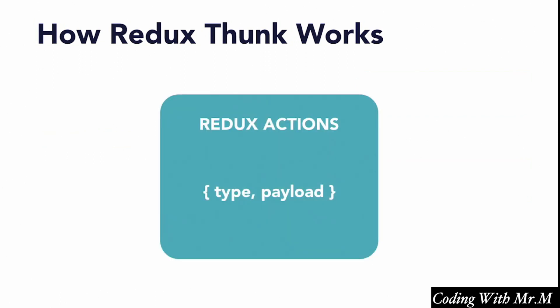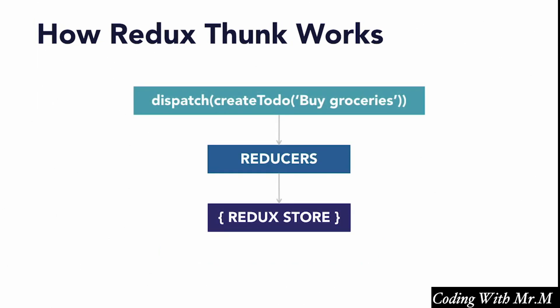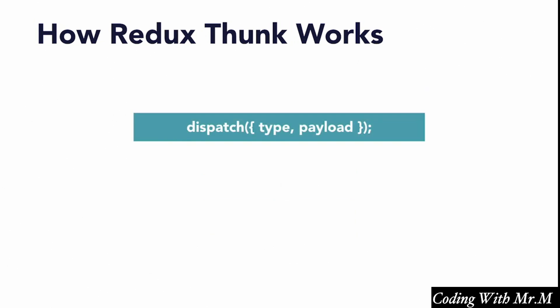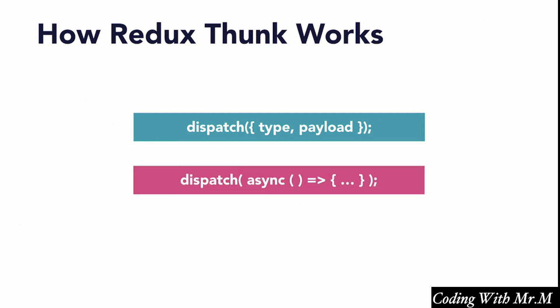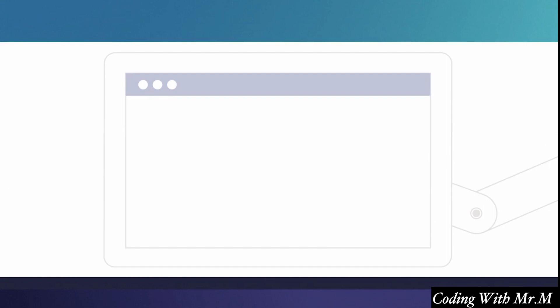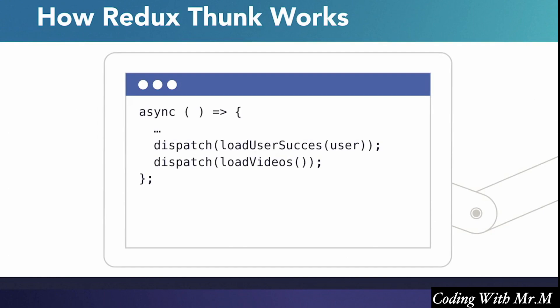Remember from previous videos that Redux actions are just objects that contain a type property, and perhaps some other data in the action's payload. When we dispatch a Redux action, Redux calls our reducers with this action, and the reducers determine what the state should look like afterward. So what a Thunk is, is when instead of dispatching a Redux action — which is just a JavaScript object — we pass a function to dispatch. This function is where we put whatever async operations we want to perform, such as loading data. We can also dispatch other actions or even other Thunks from inside this function.